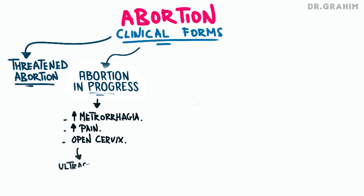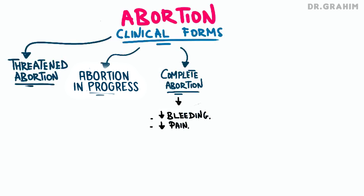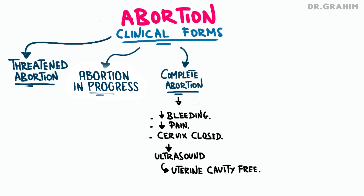The third form is a complete abortion, which occurs when all conception products have been expelled from the uterus. After complete expulsion, bleeding gradually decreases and pelvic pain disappears, marking the end of the abortion. On clinical examination, the cervix is generally closed and there are no signs of residual conception products in the vagina. Ultrasound shows that the uterine cavity is free of any conception product, confirming that the abortion is complete.